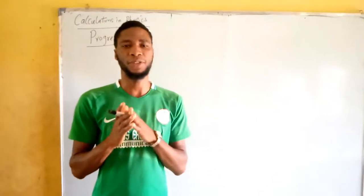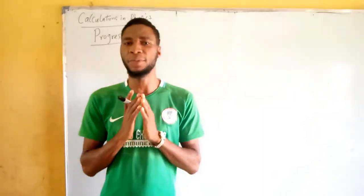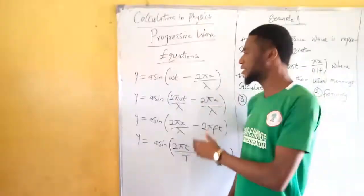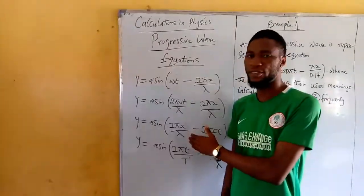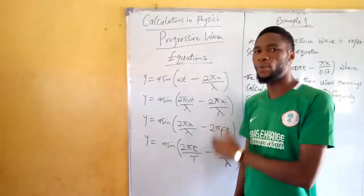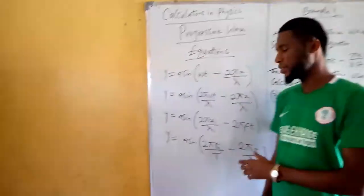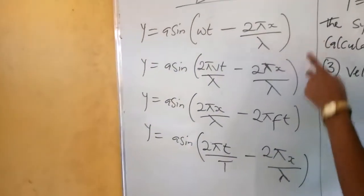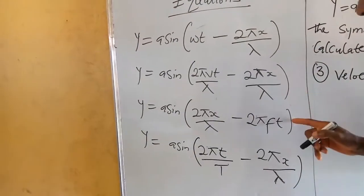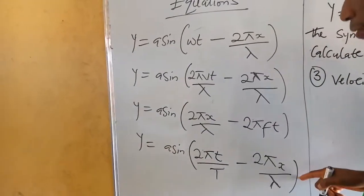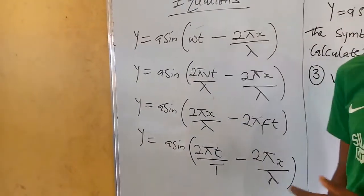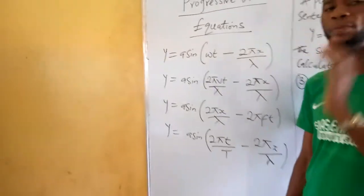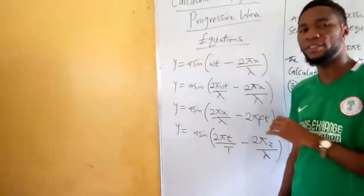Today in our calculation in physics we are going to be dealing on progressive wave. These are the equations in solving progressive wave. We have the first equation, the second equation, the third equation, and the fourth equation. You can use any of the equations to solve problems on progressive wave.